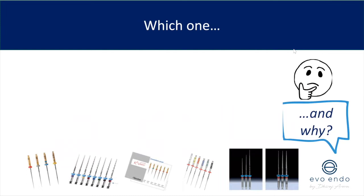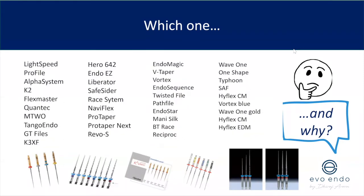Files — this always confuses people and it's the first question everyone asks: which file systems do you use and why? There are so many file systems on the market now — with interesting names like Tango Endo, Vortex, Typhoon — and manufacturers design files to encourage you to use theirs. But which one is better and what properties are you looking for?